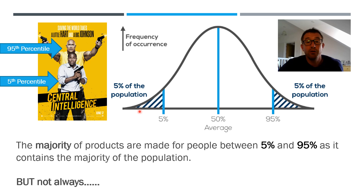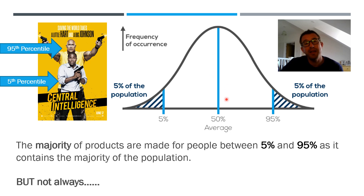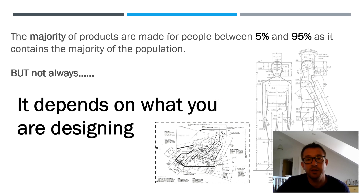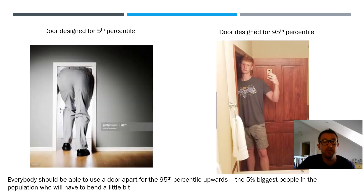We'd hope that all those different people would fit within the design range. You might argue that you'll design a product to fit Mr. or Miss Average, but that's not always the case. It depends entirely on what you're designing, and all these measurements are used to determine the appropriate percentile size — for example, for arm reach. The next slide explains what that means.